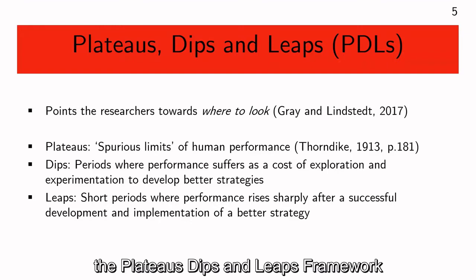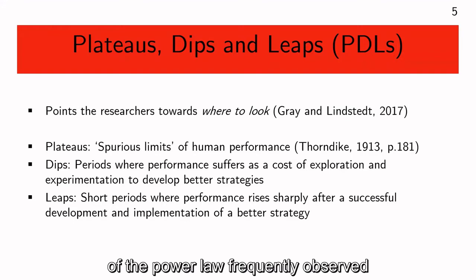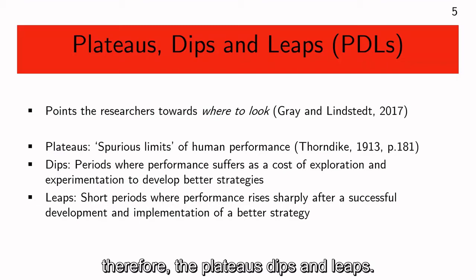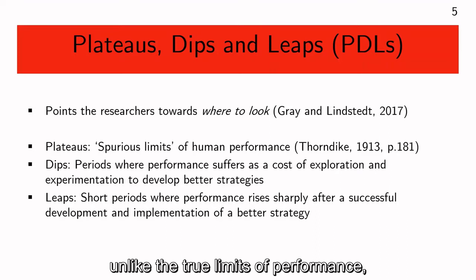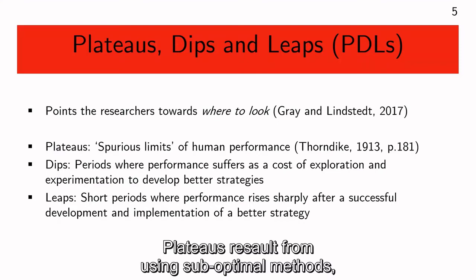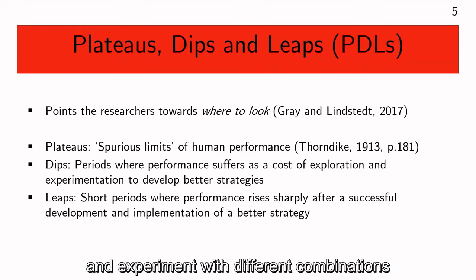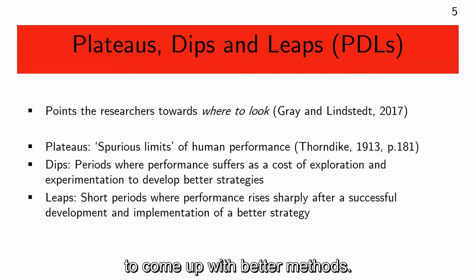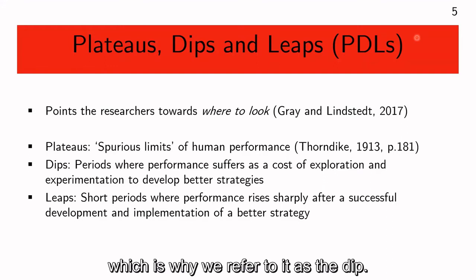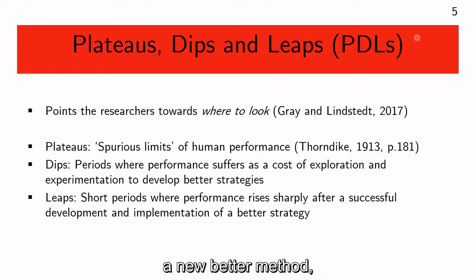The plateau, dips, and leaps framework points researchers towards where to look. Three deviations from the power law are frequently observed in individual performances: plateaus, dips, and leaps. Plateaus are spurious limits of performance that can be overcome, unlike the true limits called the asymptote. Plateaus result from using suboptimal methods. To get out of a plateau, a performer would need to explore options and experiment with different combinations to come up with better methods. Performance is likely to drop during this period — which is why we call it a dip. And then, if successful in developing a new better method, we will see a leap in performance.